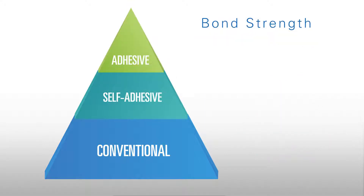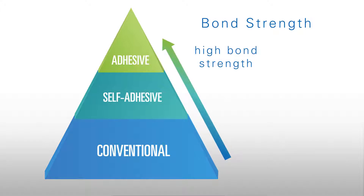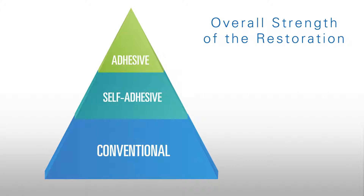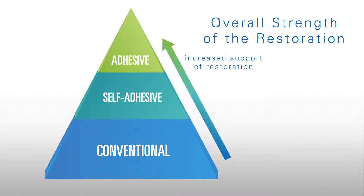Bond strength: you will achieve the best bond strength when you use an adhesive resin cement, and minimal to no bond strength when using a conventional cement. Overall strength: when adhesively bonding, the overall strength of the restoration increases versus when the restoration is cemented with a conventional cement.